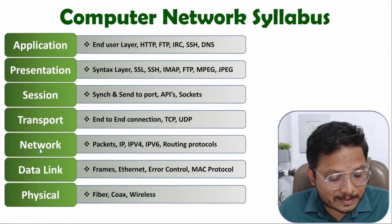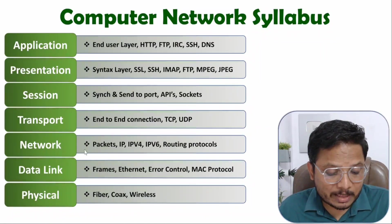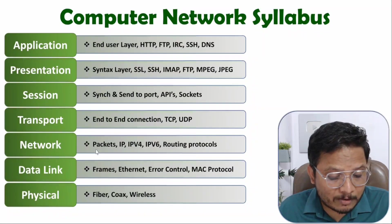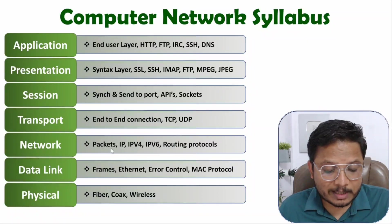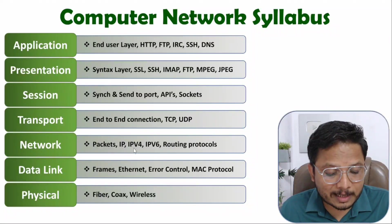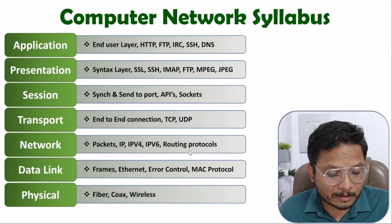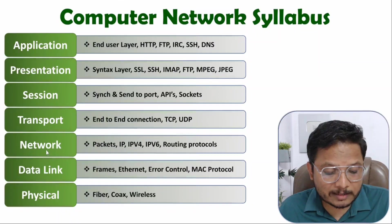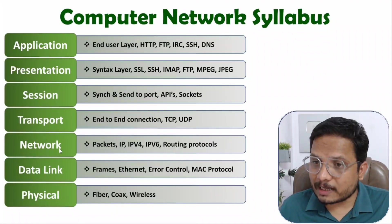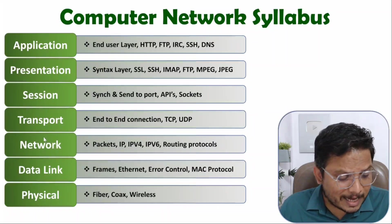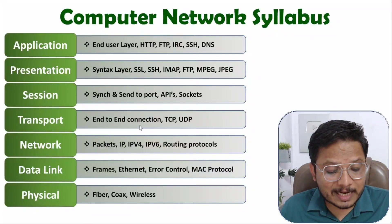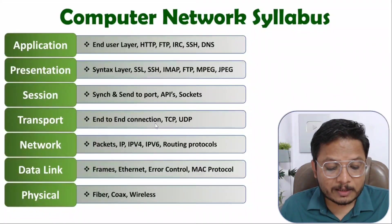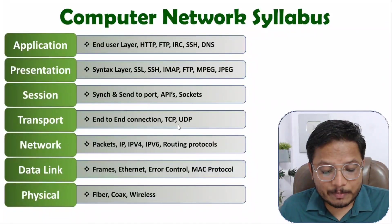Then the next chapter is based on the network layer, in which I will explain how packets are formed when we establish communication between nodes, how IP addresses work — with two versions, IPv4 and IPv6 — and how routing protocols function in the network layer. The next chapter is based on the transport layer, in which we study how end-to-end connections are established and I will cover TCP and UDP protocols.